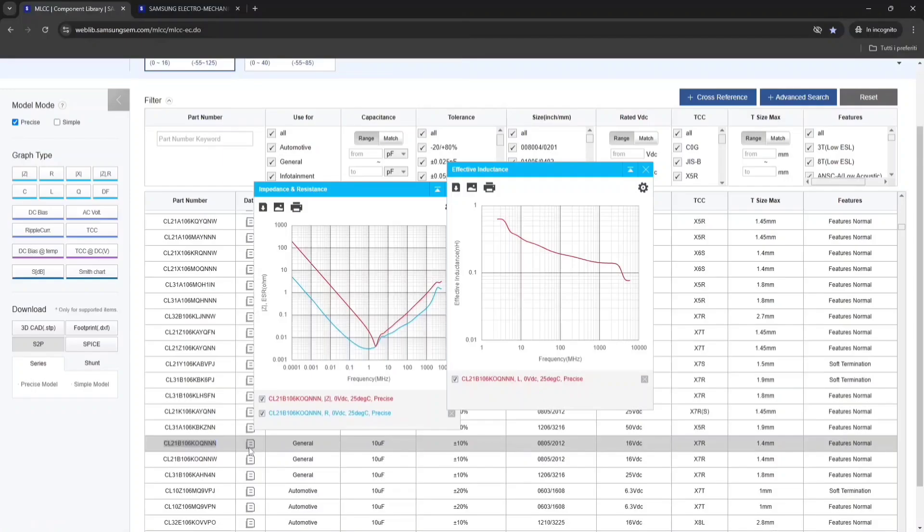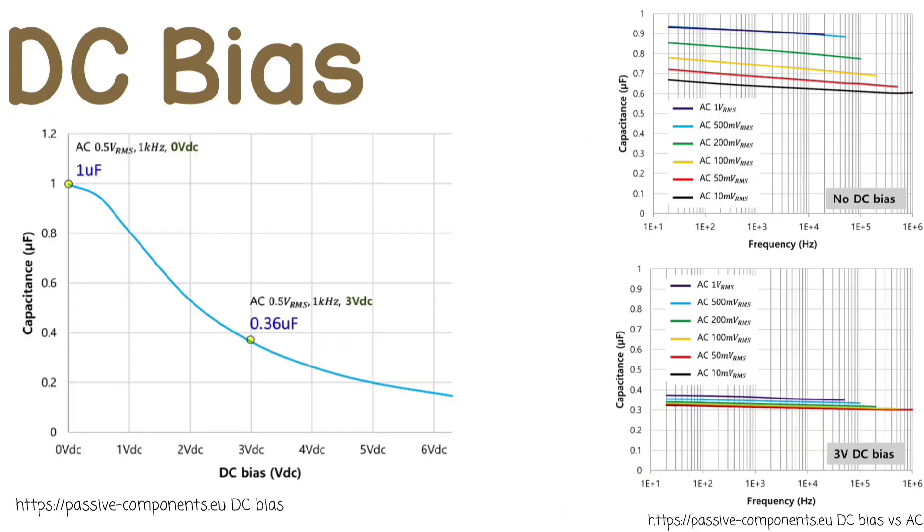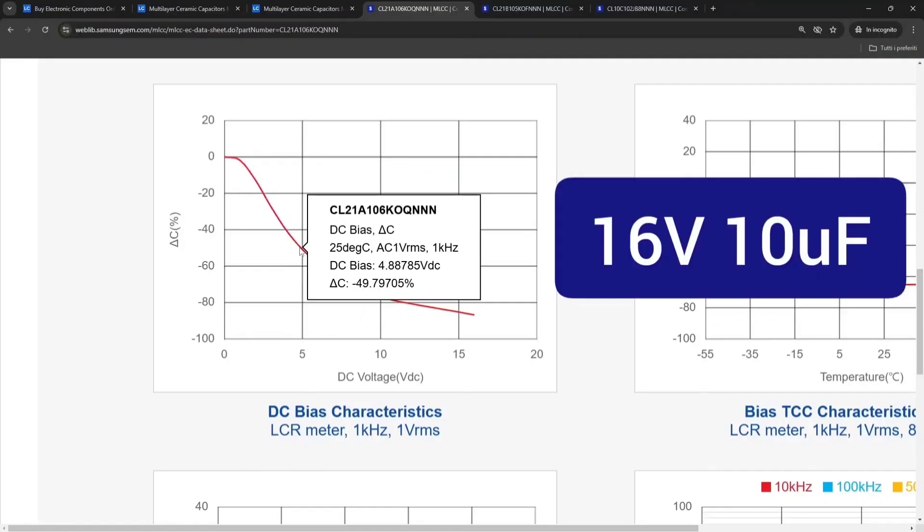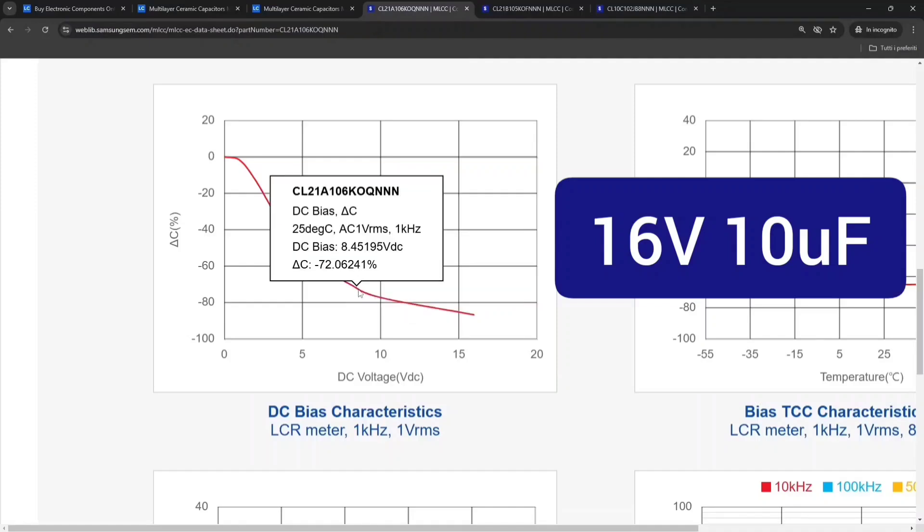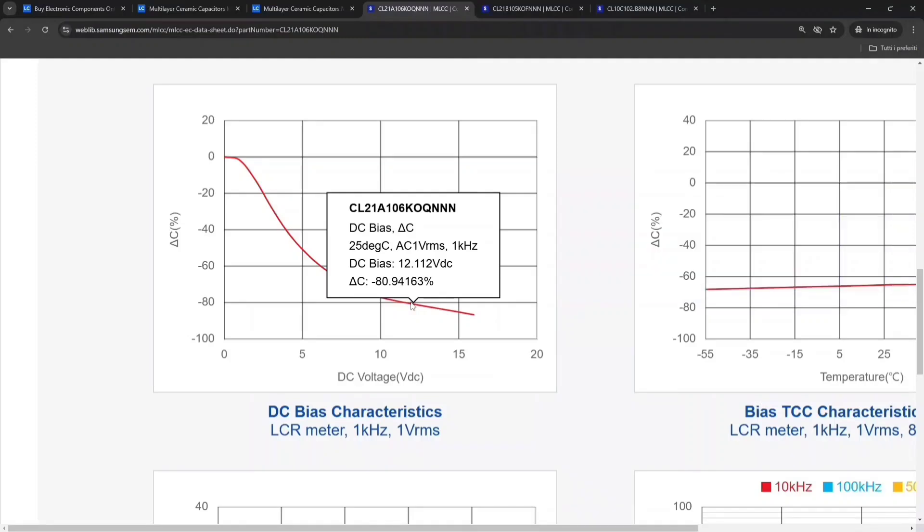The first evident effect that we discuss is called DC bias. DC bias is the change of capacitance in respect to applied voltage. The higher the voltage we apply, the lower the capacitance we get. This is a 16V 10μF capacitor. But at 5V we have minus 50% the capacitance, so only 5μF. And at 12V we have minus 80%, so only 2μF.